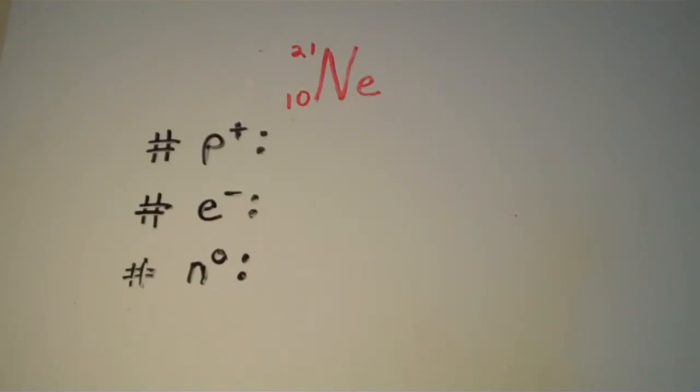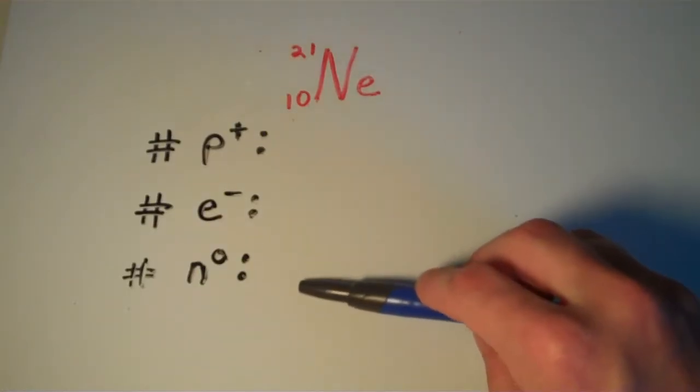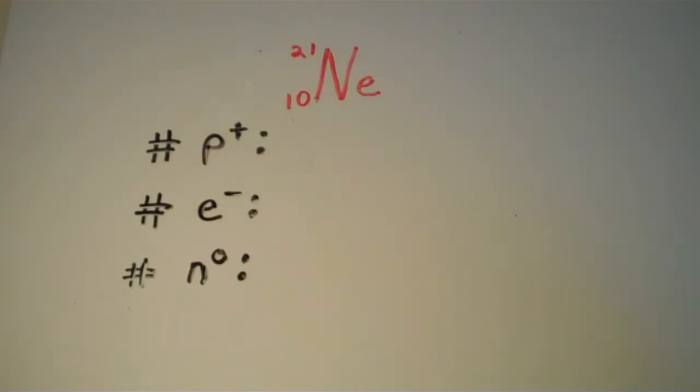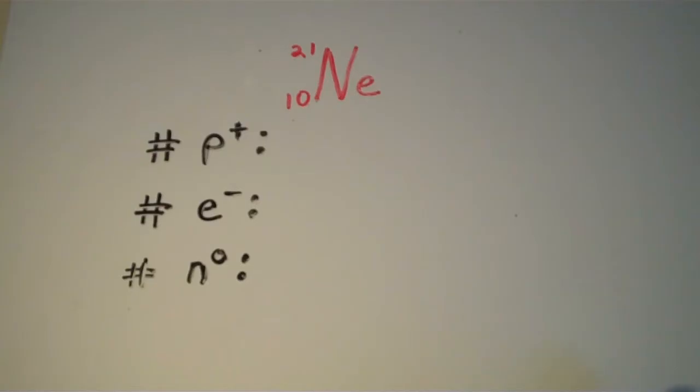All right, so now what I'm going to do is I'm going to determine the number of protons, the number of electrons, and the number of neutrons in a couple of different chemical species using different forms of this isotope notation that I discussed in my last video. So, let's do the first one.